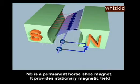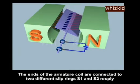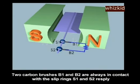It provides stationary magnetic field. The ends of the armature coil are connected to two different slip rings S1 and S2 respectively. Two carbon brushes B1 and B2 are always in contact with the slip rings S1 and S2 respectively.